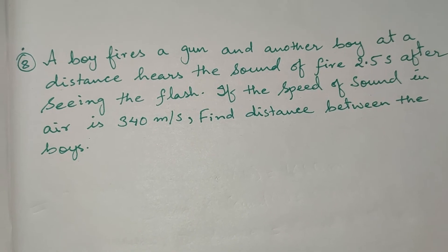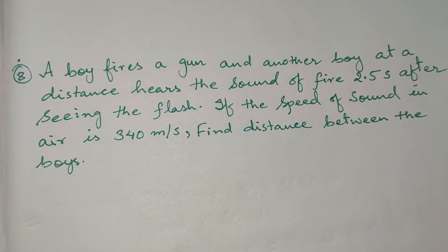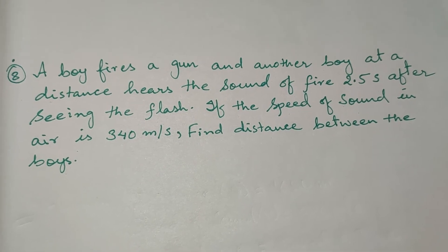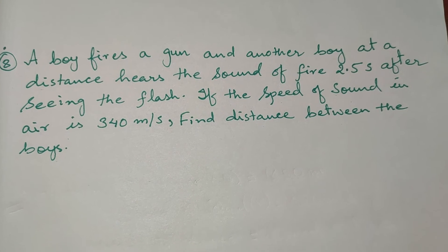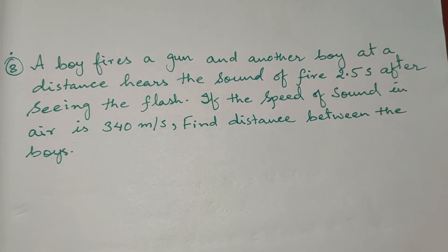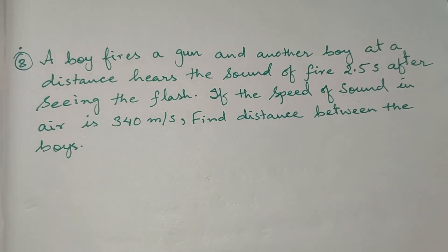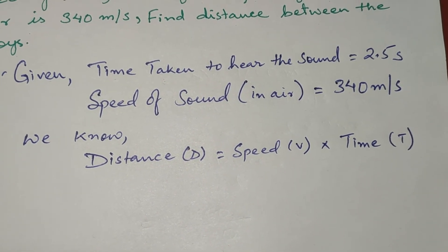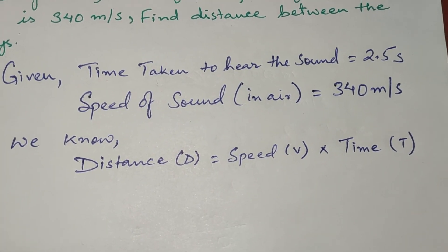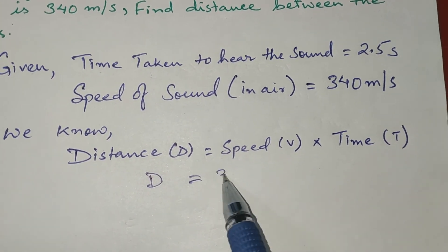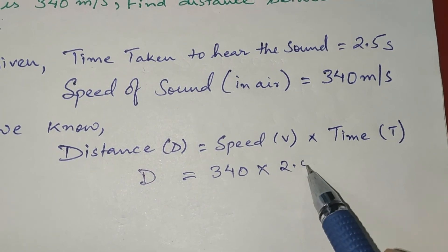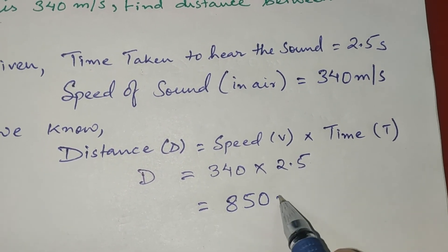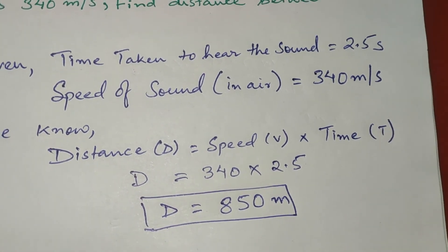The next question says a boy fires a gun and another boy at a distance hears the sound 2.5 seconds after seeing the flash. If the speed of sound in air is 340 meters per second, find the distance between the boys. Given: time = 2.5 s, speed = 340 m/s. Distance d = speed × time = 340 × 2.5 = 850 meters.